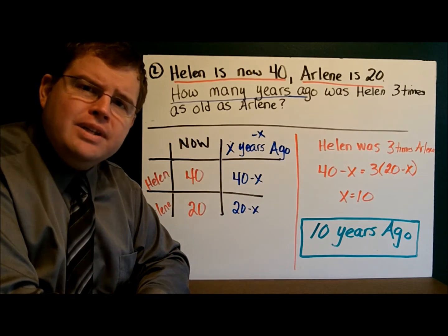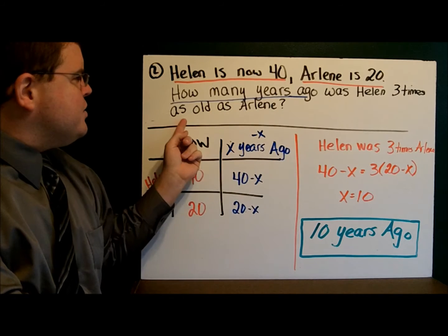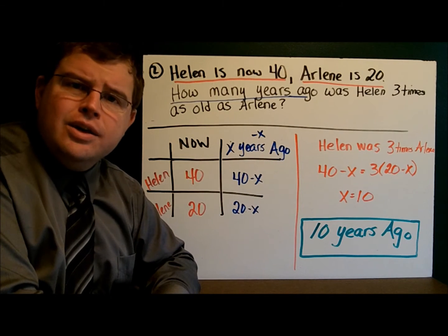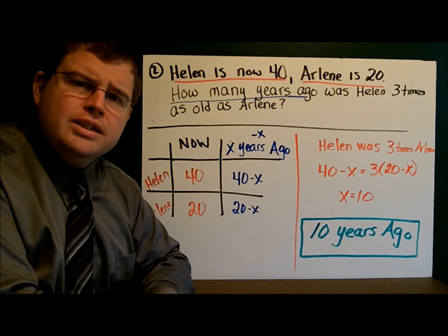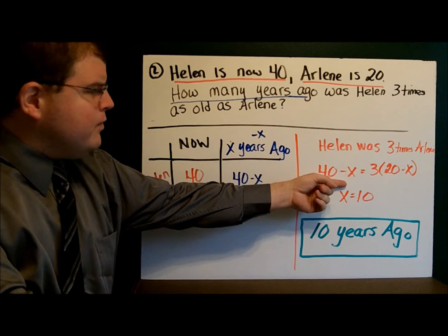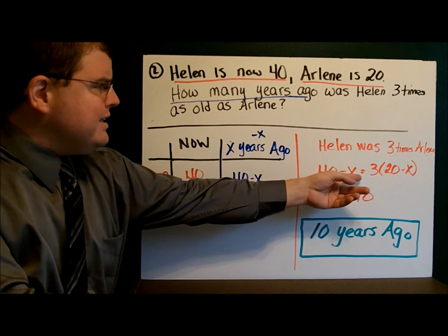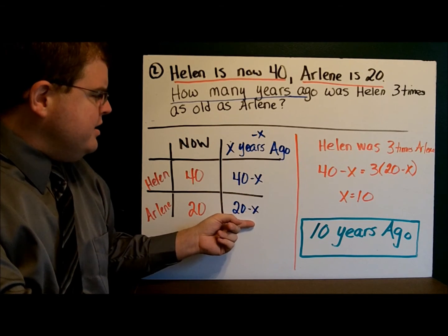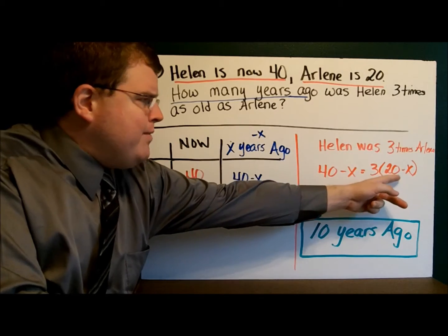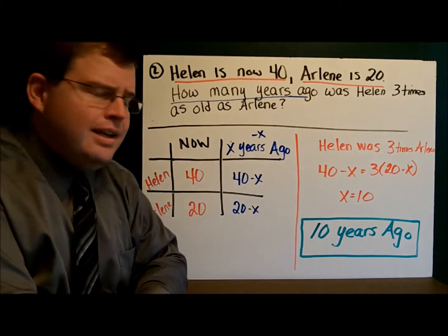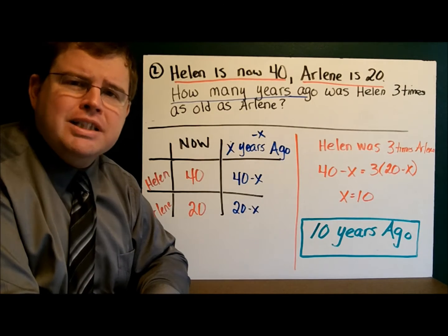Once the table is filled out, we write the statement: Helen was three times as old as Arlene. So 40 minus X equals three times 20 minus X. Don't forget to put 20 minus X in parentheses because it's three times whatever that age is. Go through and solve the equation, and X equals 10. Since we're talking about X years ago and X is 10, it must be 10 years ago.